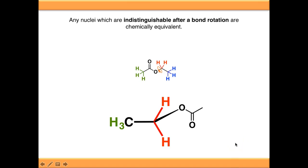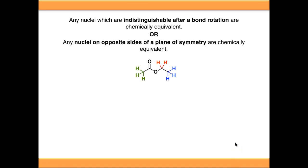But there's another way we can test for this. If they're indistinguishable by a bond rotation, they're chemically equivalent, or if they're on opposite sides of a plane of symmetry, they're also chemically equivalent.